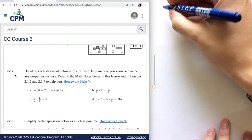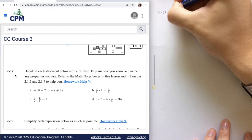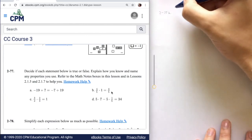Problem 2-77, we're going to be going over part b. Over here we have 4 over 5 multiplied by 1, and we want to know if that equals 4 over 5. Let's write it down.